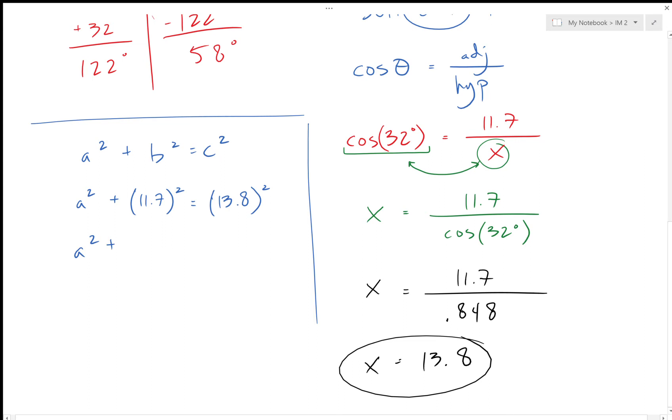So A squared plus—and now we're using our calculator—11.7 squared is 136.89, and 13.8 squared, 190.44. We'll go ahead and subtract that 136 number to the other side.